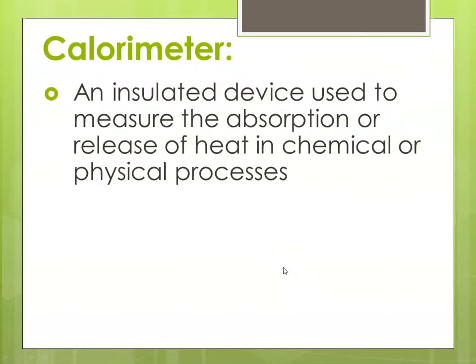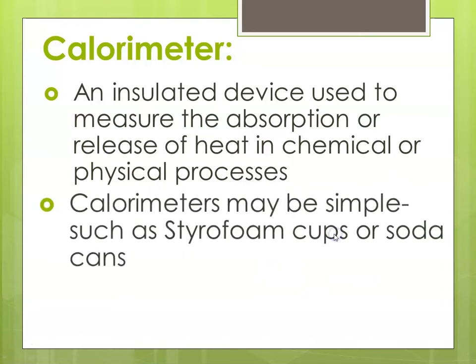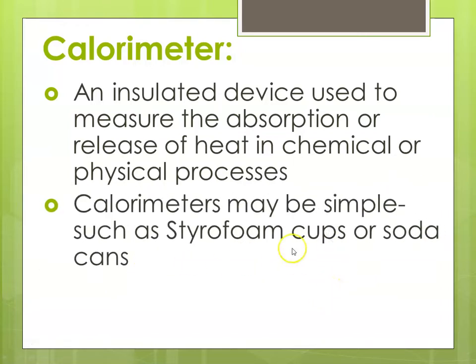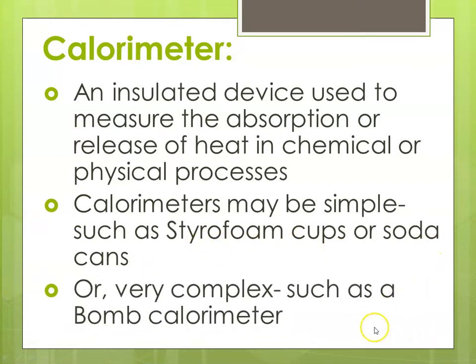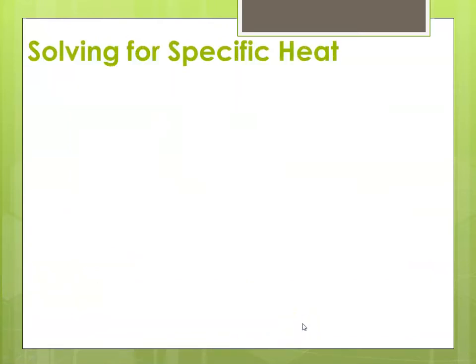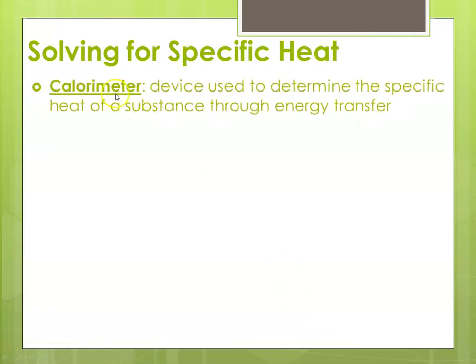What is a calorimeter? The calorimeter is an insulated device that's used to measure the absorption or release of heat — so heat changes — that happen when chemical or physical processes take place. Calorimeters may be super simple, like a styrofoam cup, which is what we're going to use today, or a soda can, or they can be very complex, something called a bomb calorimeter. In solving for specific heat, you use a calorimeter, a device used to measure specific heat by controlling and measuring the changes in heat and energy transfer that takes place.